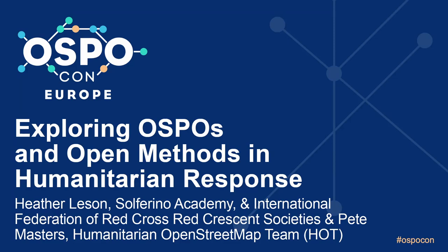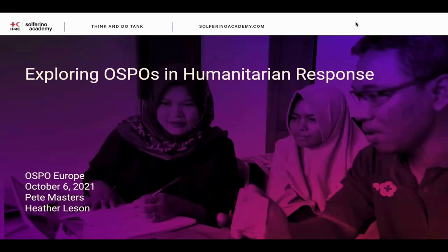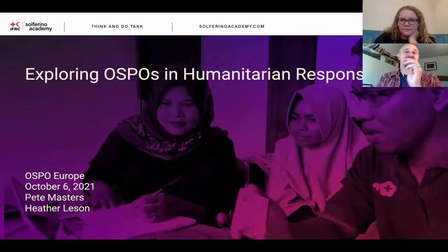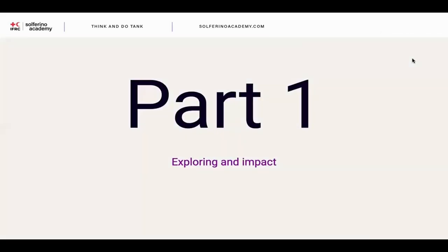Very exciting to be with you, and very sad not to be with you in person. We're doing this digitally. I'm Pete Masters, I work for the Humanitarian OpenStreetMap Team. My colleague here is Heather Leeson, who works at Solferino Academy. We'd like to talk about this topic in two parts: firstly some context and case studies, and then exploring what this means for OSPOs and local communities — the potential and the frictions. When we talk about humanitarian, we're talking about it with a small h — people working in solidarity with people to save lives, alleviate suffering, and restore dignity.